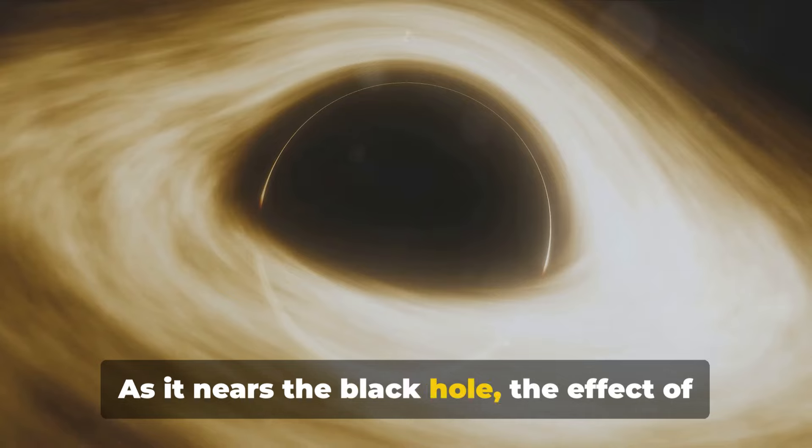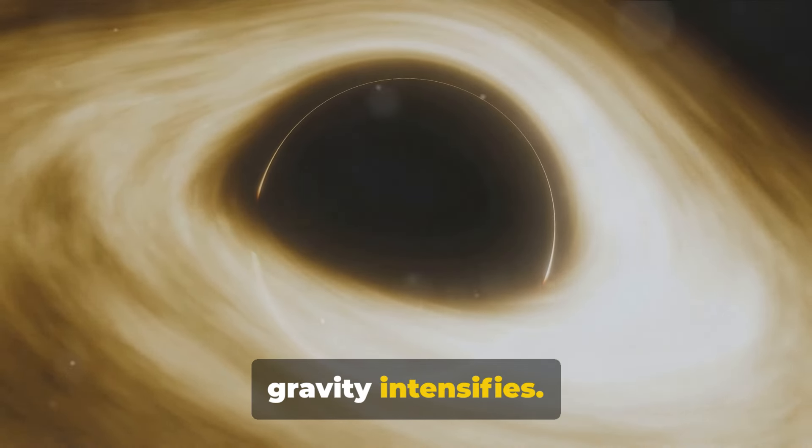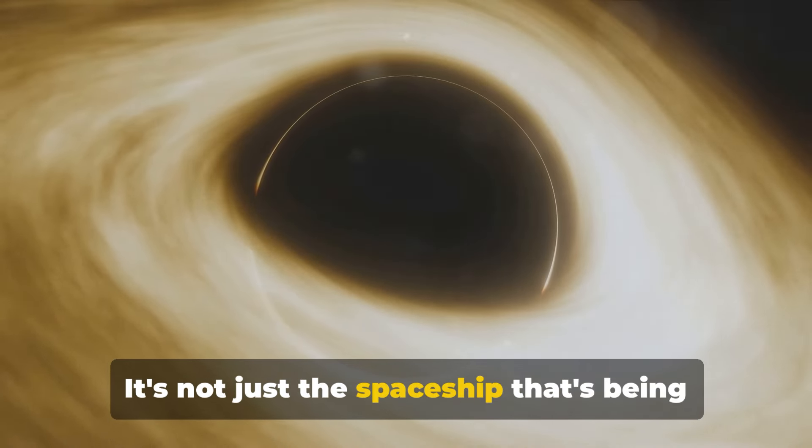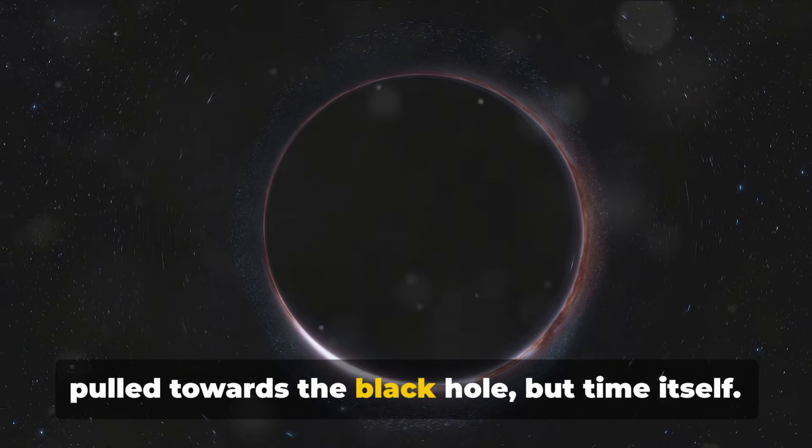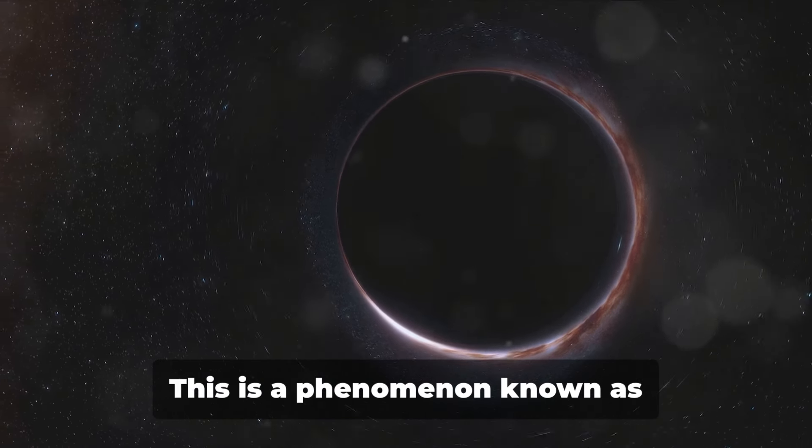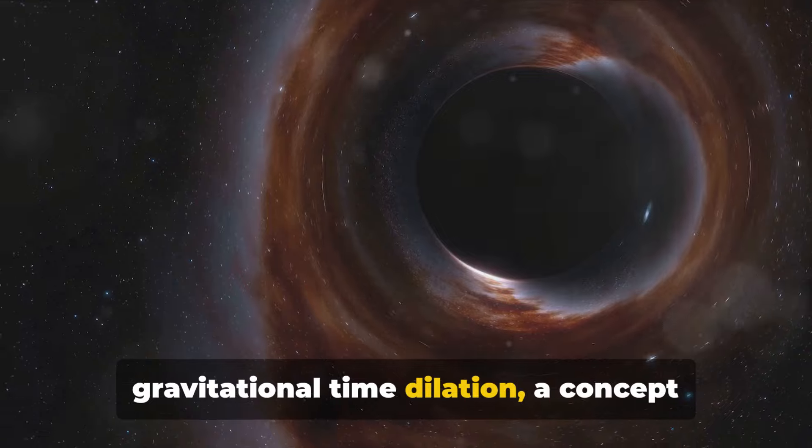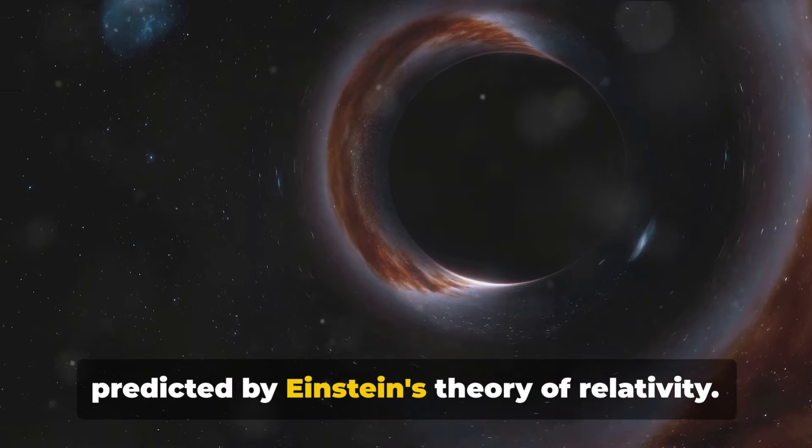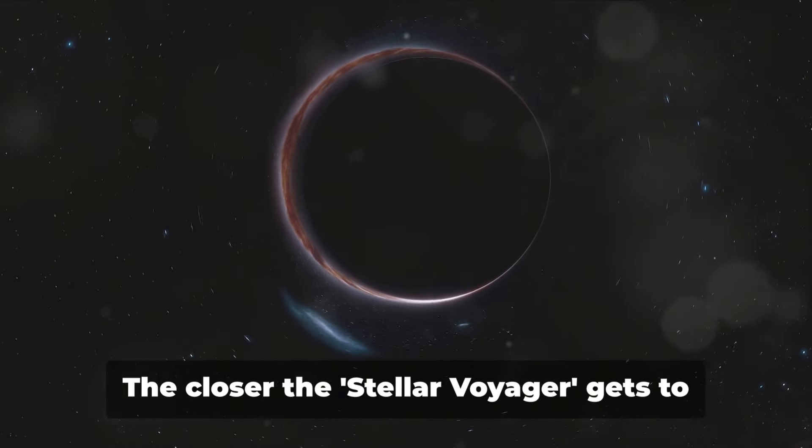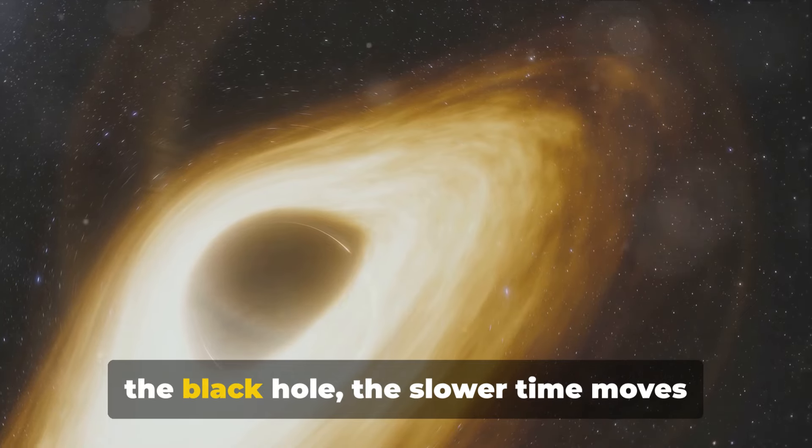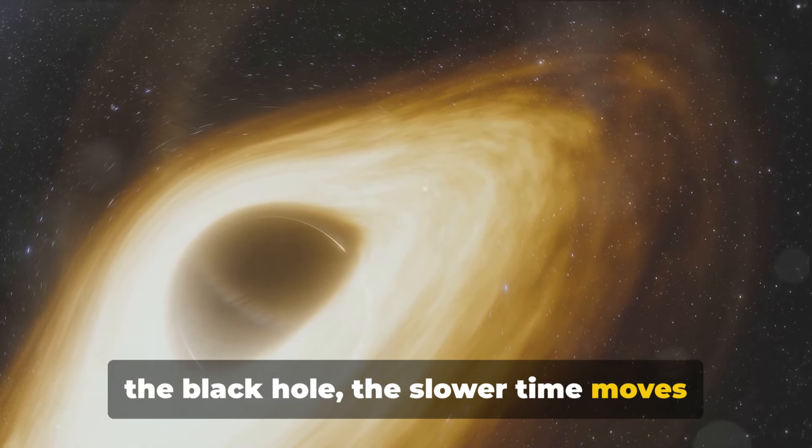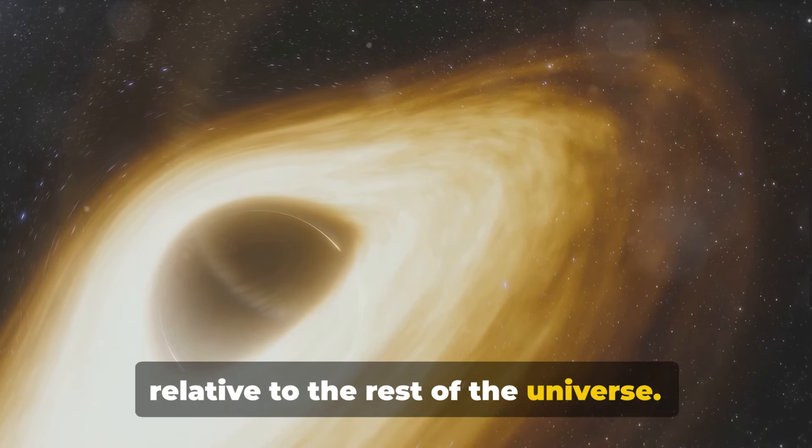As it nears the black hole, the effect of gravity intensifies. It's not just the spaceship that's being pulled towards the black hole, but time itself. This is a phenomenon known as gravitational time dilation, a concept predicted by Einstein's theory of relativity. The closer the Stellar Voyager gets to the black hole, the slower time moves relative to the rest of the universe.